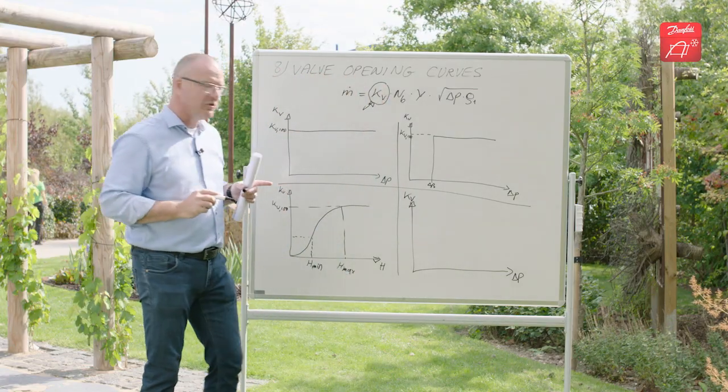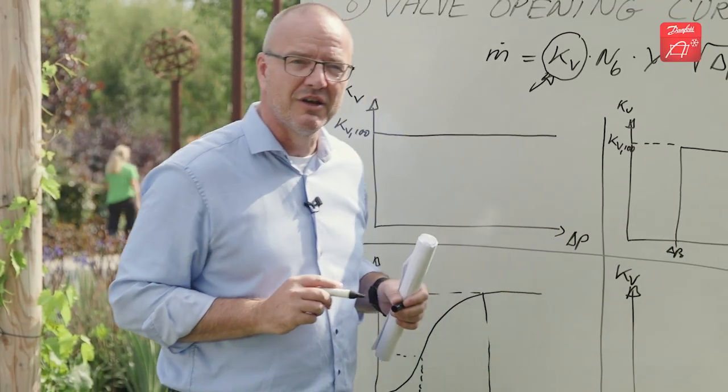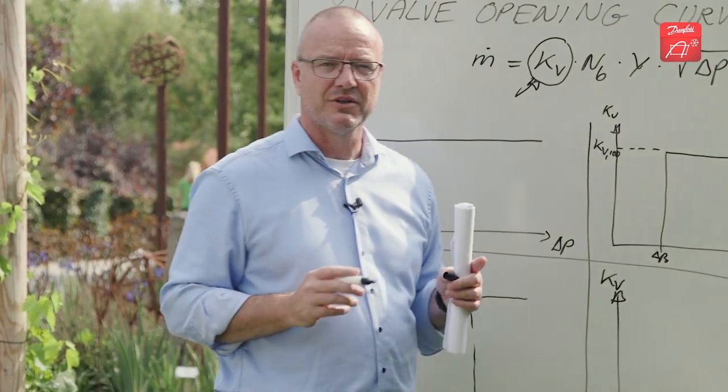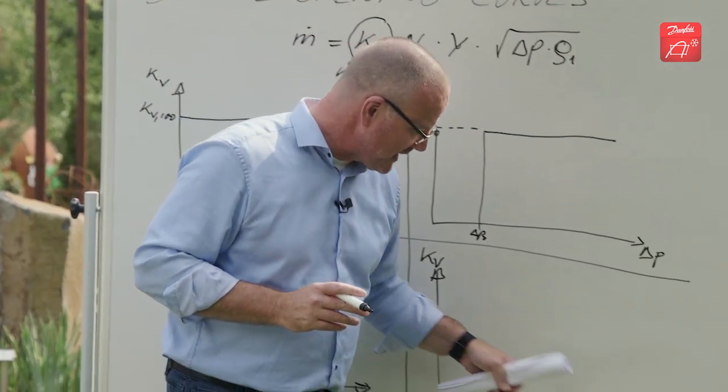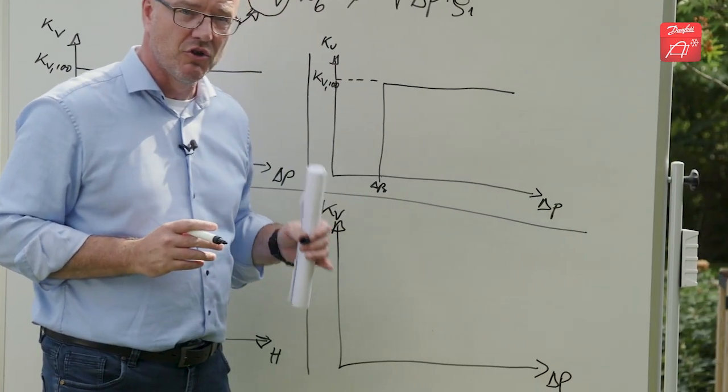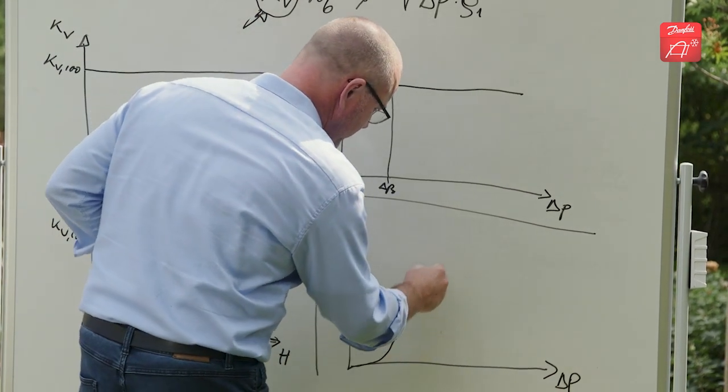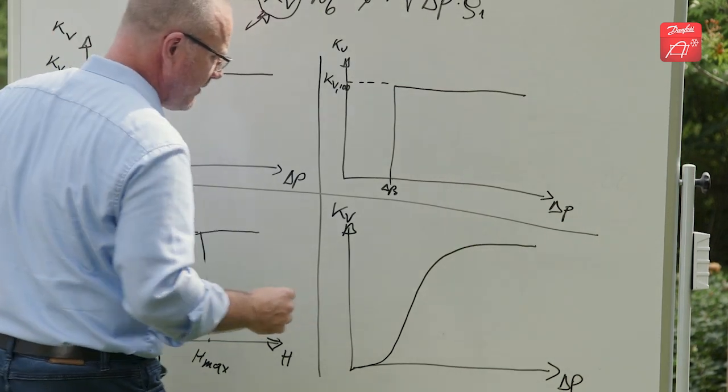The final valve type we look at, that is the servo piston operated solenoid or control valve. These valves actually require a certain pressure drop to open at all. And they require sometimes quite a bit of pressure drop to open fully. The characteristic of these valves looks very much like the characteristic of the direct operated valves.